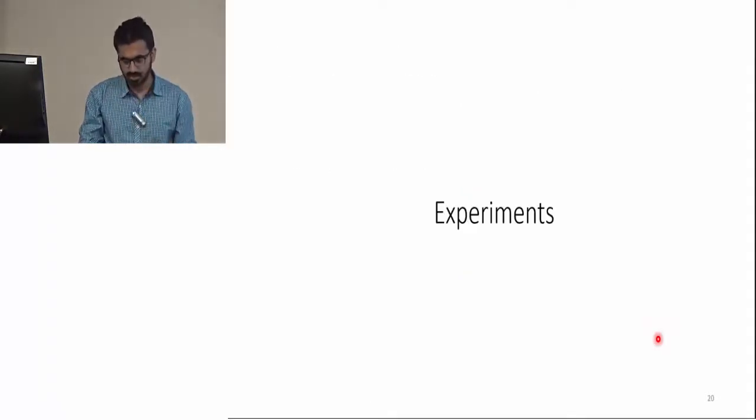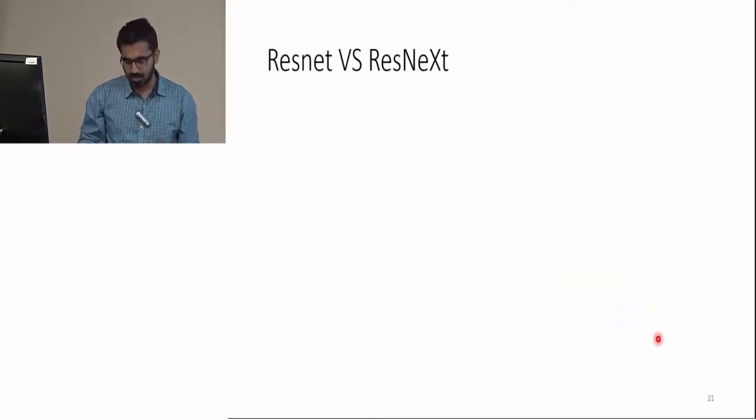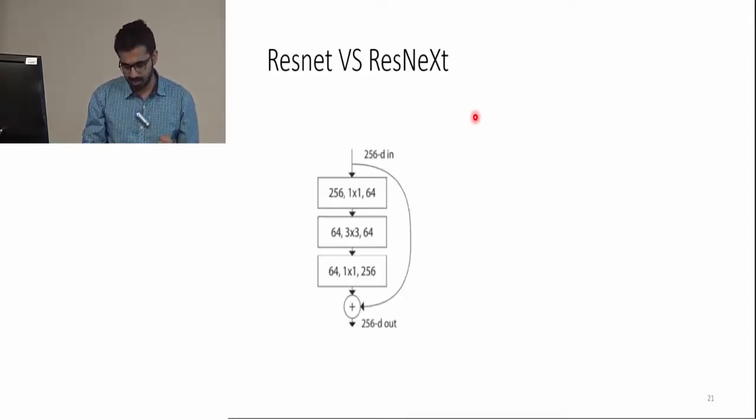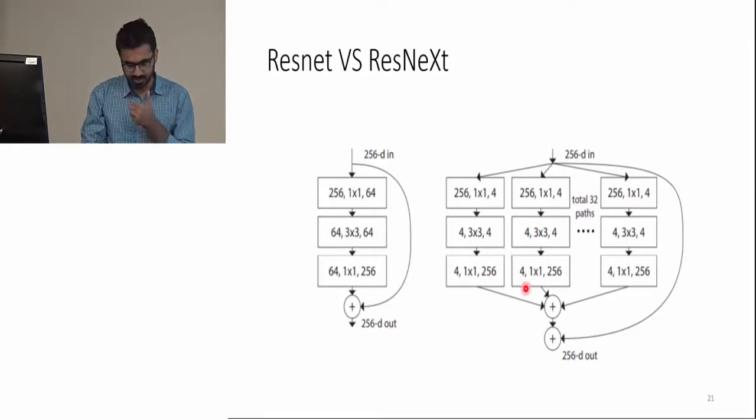Now the experiments. Before moving on to the experiments, I want to discuss some network architectures that are used in the experiments. Here I will compare ResNet and ResNeXt. Here we have a simple ResNet block, and you can compare it to a ResNeXt block. The difference here is that ResNeXt has multiple parallel channels of convolution while ResNet has only one of them.